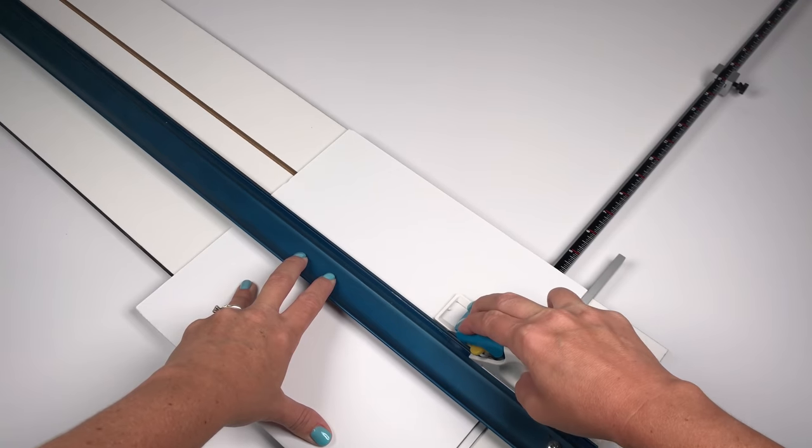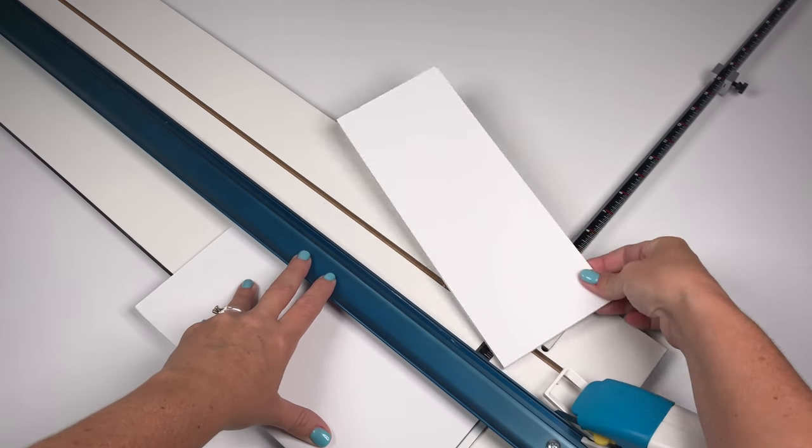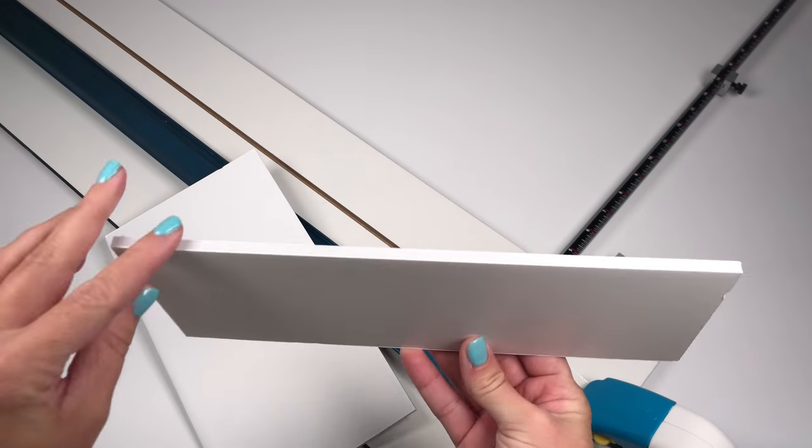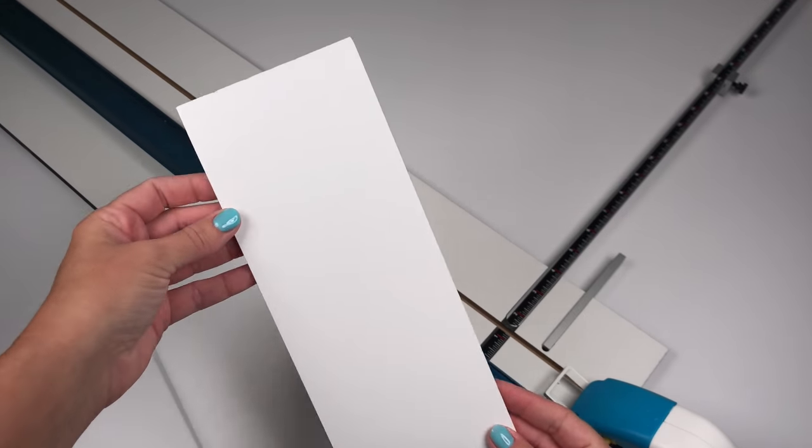When I cut foam board, I like to use my Foamworks tools because they give me a nice, clean edge. You can also use a fresh blade on an X-Acto knife.